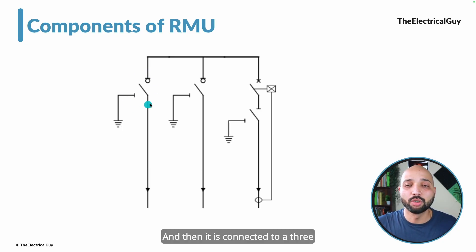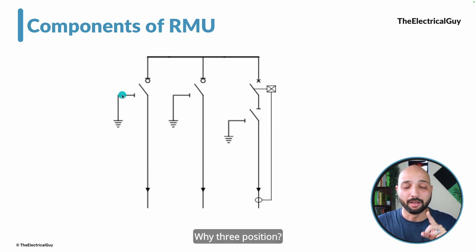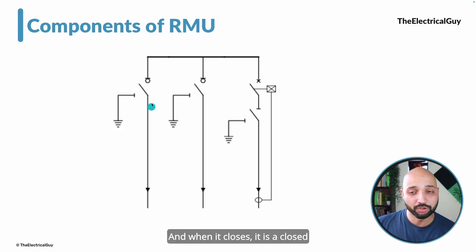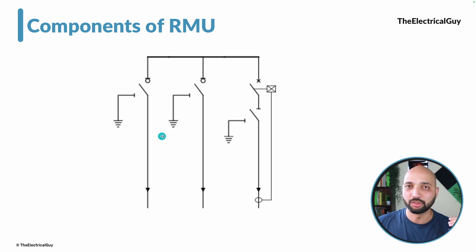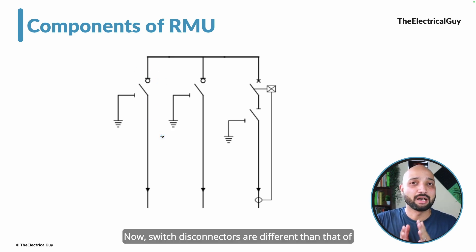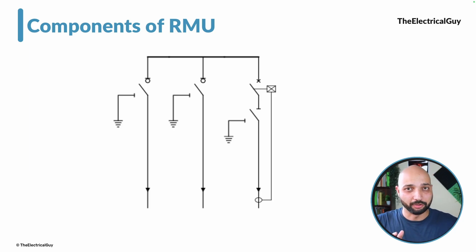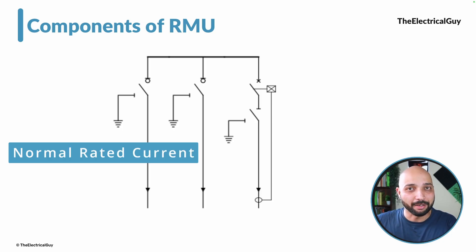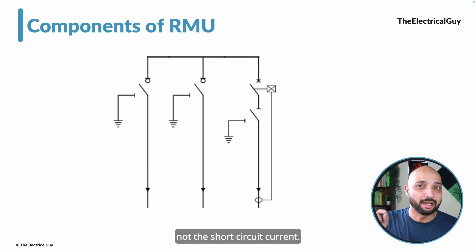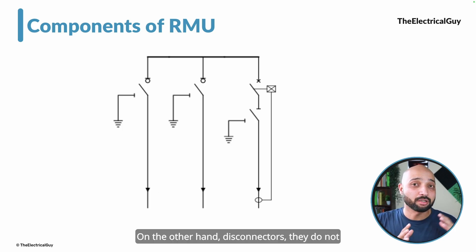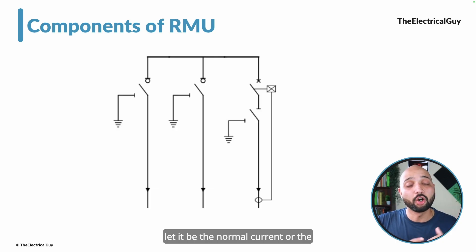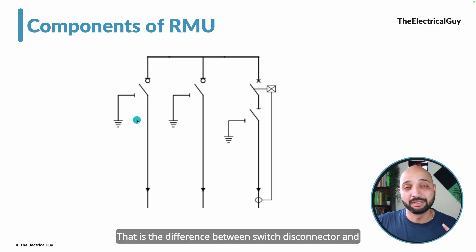The cable is connected to a three-position switch disconnector. Why three positions? One position is the earth position, the current position is the open position, and when it closes it is the closed position. Switch disconnectors are different from disconnectors. Switch disconnectors have the capability to break the normal rated current — normal rated current, not the short circuit current. On the other hand, disconnectors do not have the capability to break any sort of current; they can only operate offload. That is the difference between switch disconnector and disconnector.